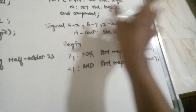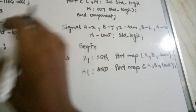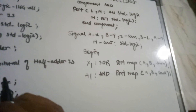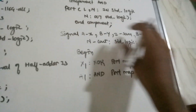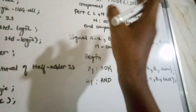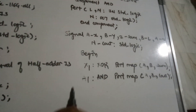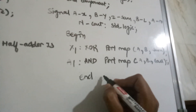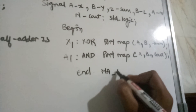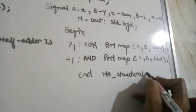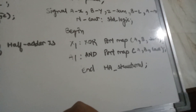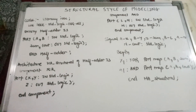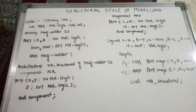Now that we have mapped all ports, defined signals, declared components, written the entity, and defined the architecture, the code is complete. To end the architecture, write: end <architecture_name>. And your structural style of modeling code for the half adder is done.